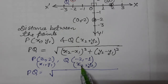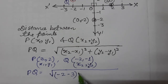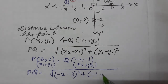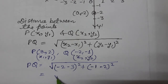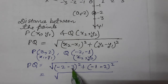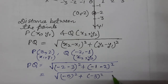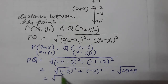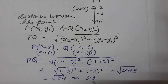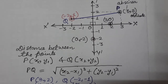Now the distance PQ — using the formula: under root of (x2 − x1) whole square plus (y2 − y1) whole square. Substituting values: x2 is −2, x1 is 3, y2 is 1, y1 is 2. So we get: under root of (−2 − 3)² + (1 − 2)² = under root of (−5)² + (−1)² = under root of 25 + 9 = under root of 34. Now, 34's root is near about 5.9, since the square root of 36 is 6.